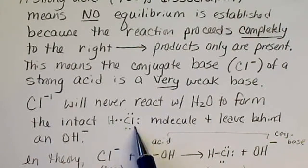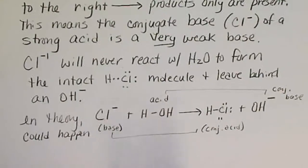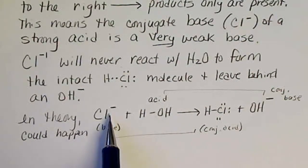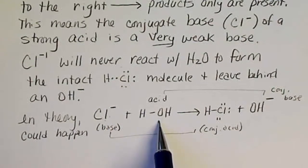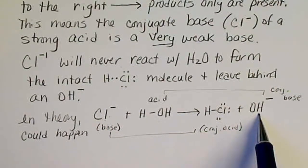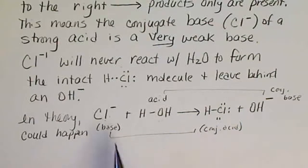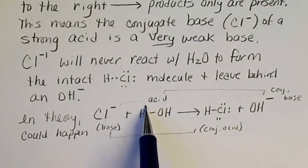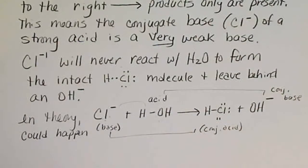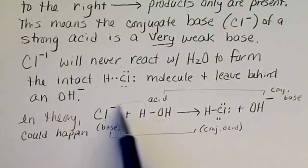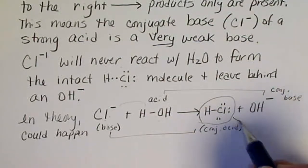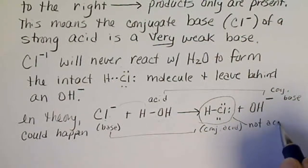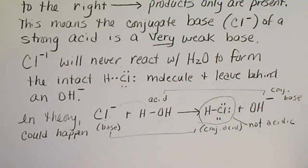In theory, or on paper, we could have chloride in the presence of water — it is the conjugate base of hydrochloric acid. A base could react with water to form the basic hydroxide: chloride could pull a proton off of water, with water acting as the acid. If this reaction occurred, this would form intact HCl, which is not acidic — an intact molecule would just be a neutral molecule.